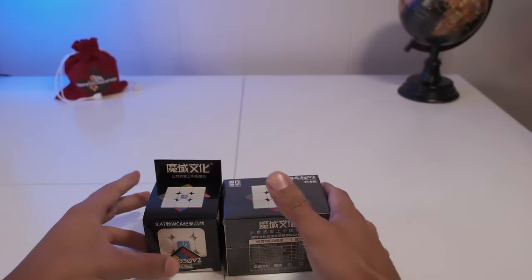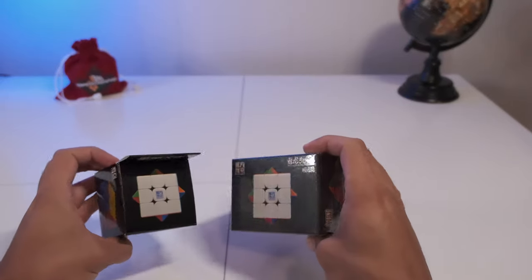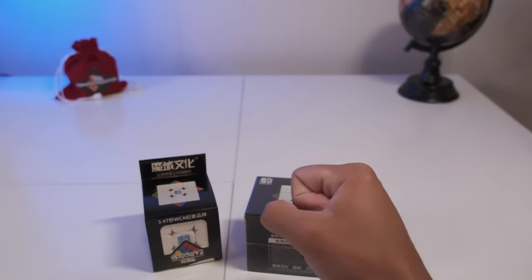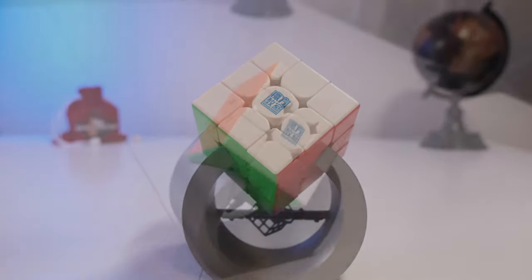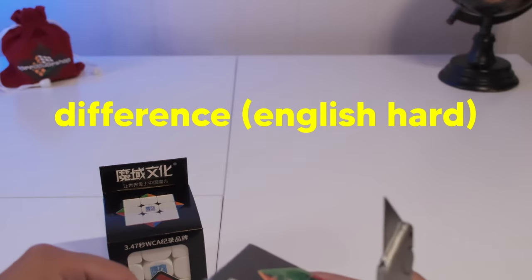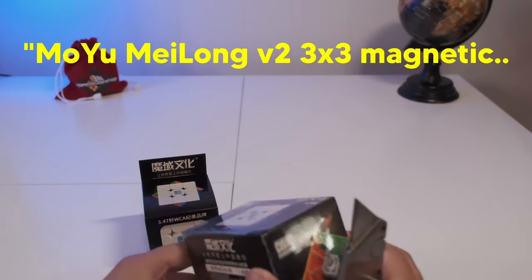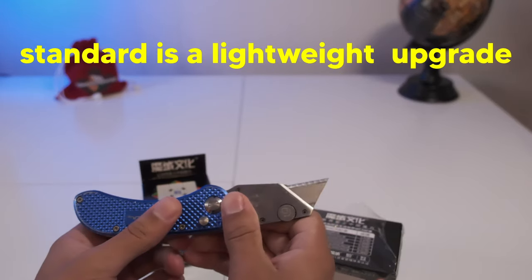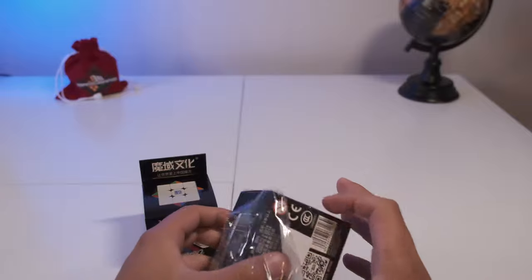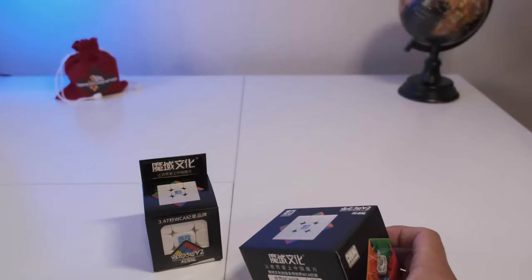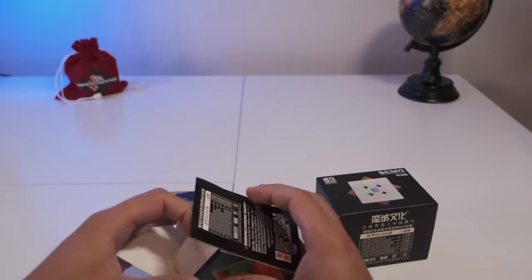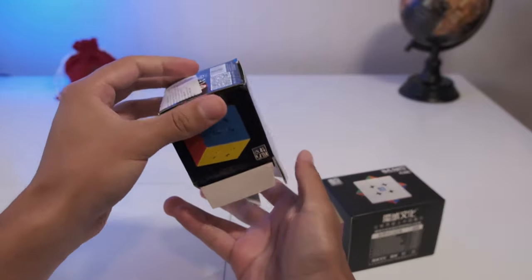First things first, we're going to be taking a look at the Meilong V2 line, starting with the light and standard. So the light and standard are actually the same thing. The only difference is the packaging, so the light comes with no accessories at $1 cheaper price difference. The description says Moyu Meilong V2 3x3 Magnetic Standard is a lightweight upgrade to one of the most popular entry level cubes ever.